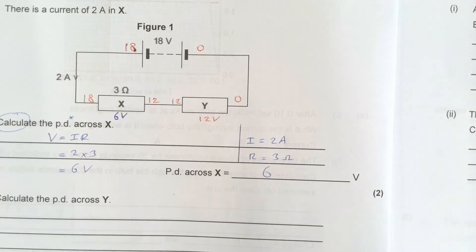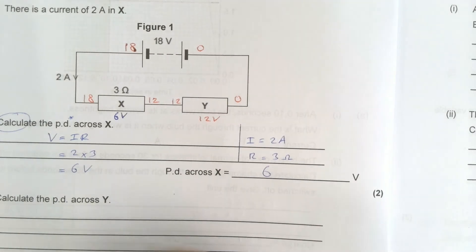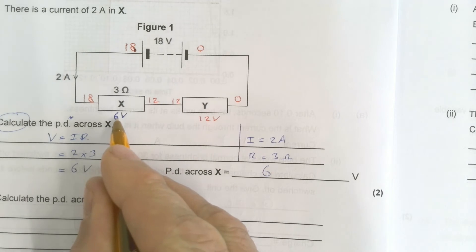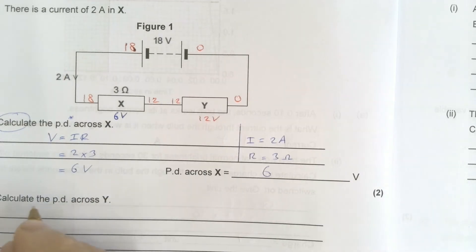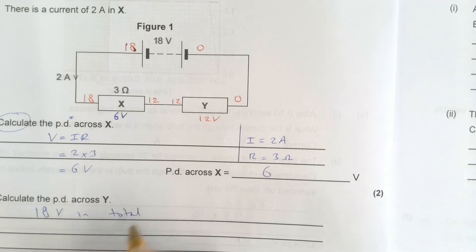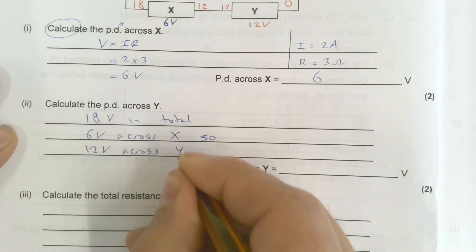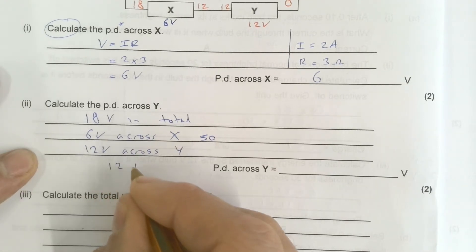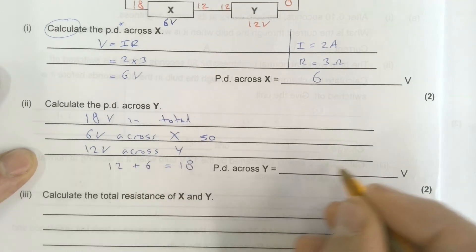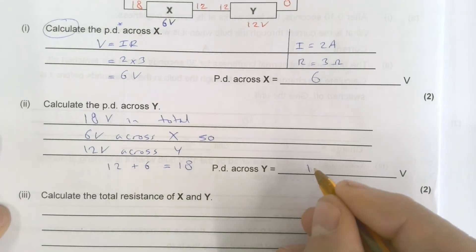And they must go to 0 here, which means that must be a total of 12 volts. So I know here the potential difference must be 12 volts. And I also know that 6 plus 12 must equal 18. So calculate the PD across Y. Well, I know 18 volts in total. 6 volts across X. So 12 volts across Y. Because we know that 12 plus 6 equals 18. 12 volts there.